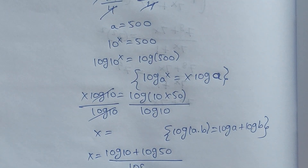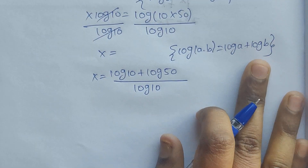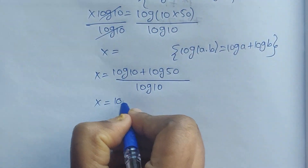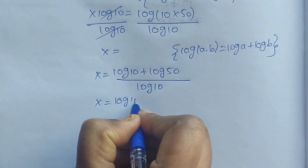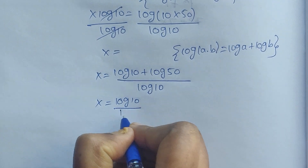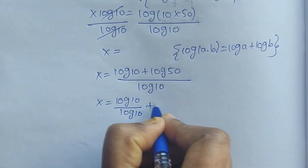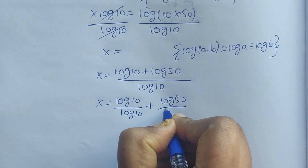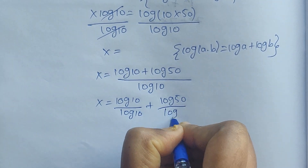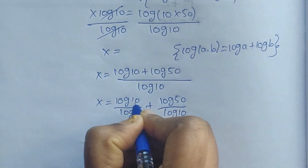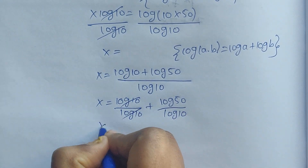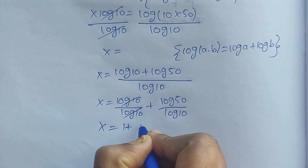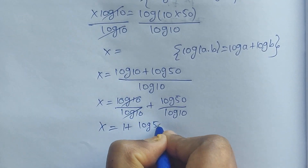Log 10 gets cancelled, giving us x equal to 1 plus log 50.